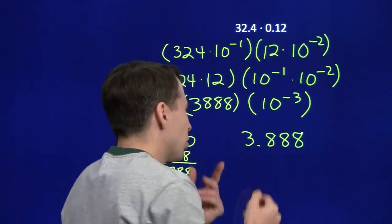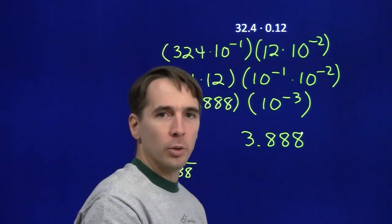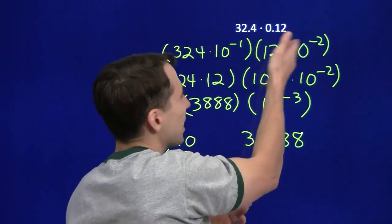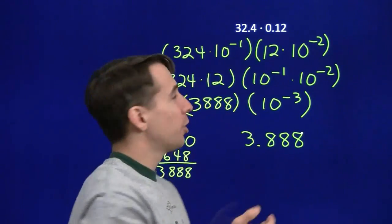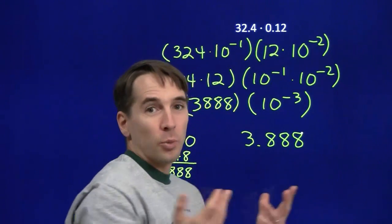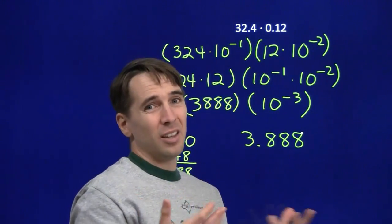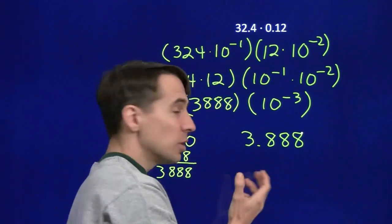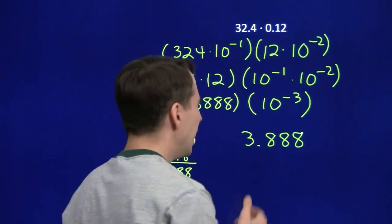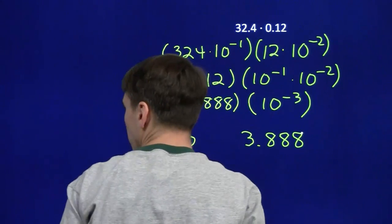And we can do a quick sanity check to make sure our answer at least has the decimal point in the right place by thinking about a quick estimation for this calculation. 32.4, that's around 30. 0.12, that's around a tenth. 30 times a tenth, 30 divided by 10 is 3. This is around 3. So that gives us some more confidence that we're correct here. I like to do these quick checks, make sure I didn't make any mistakes that would be easy to catch.